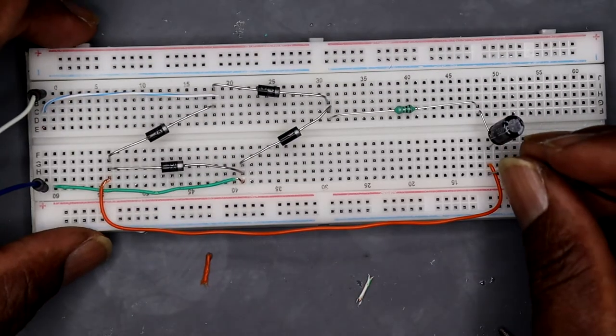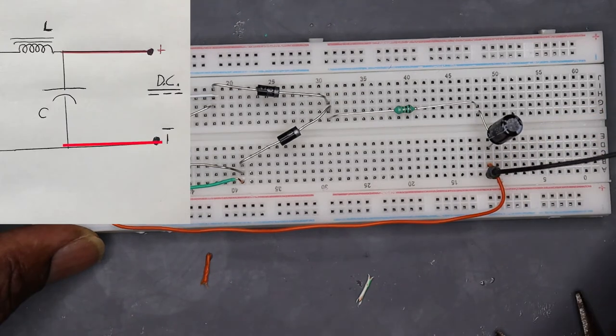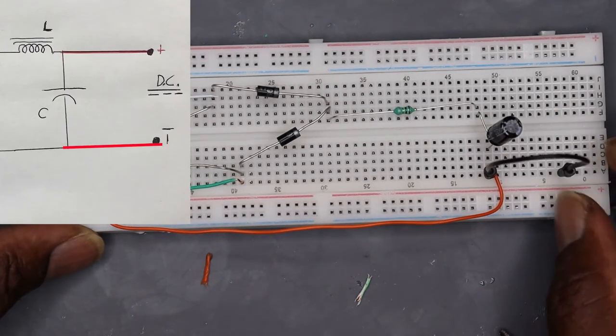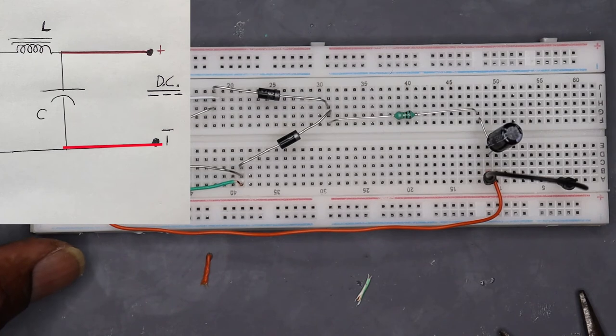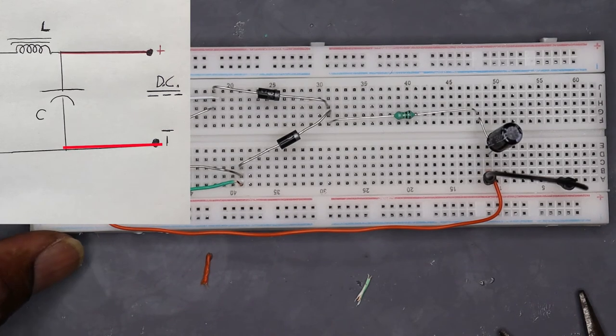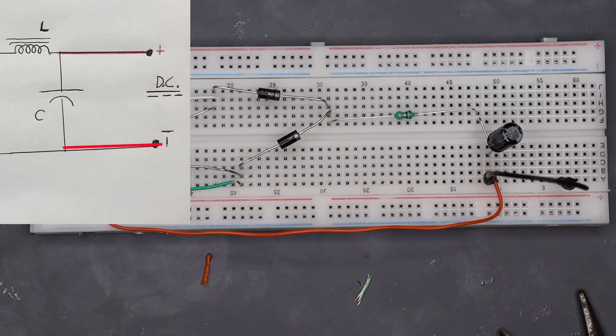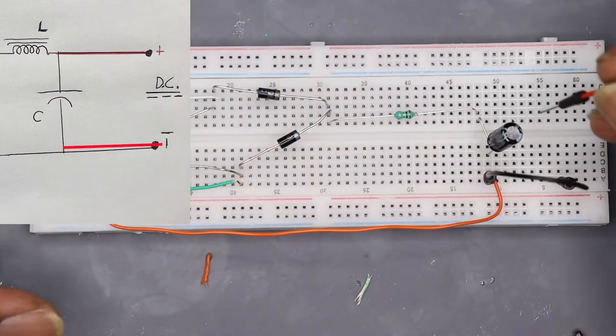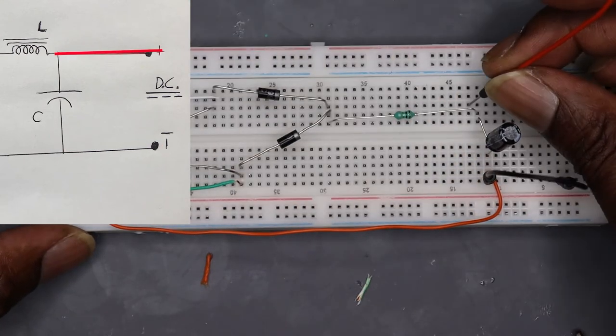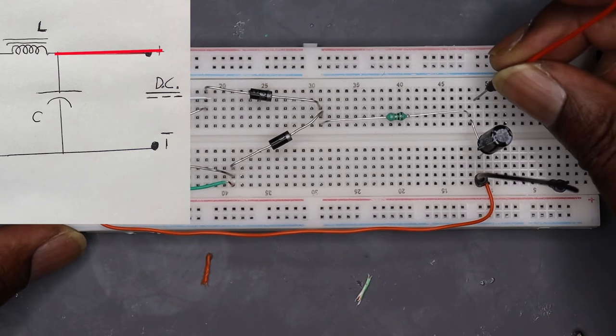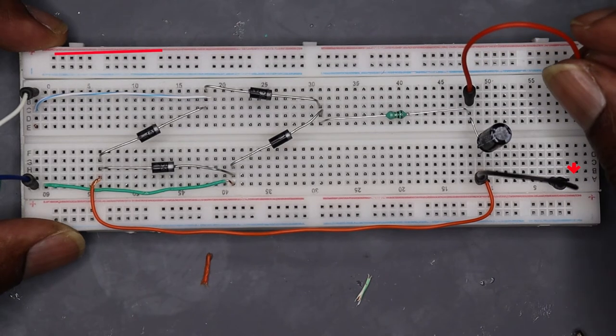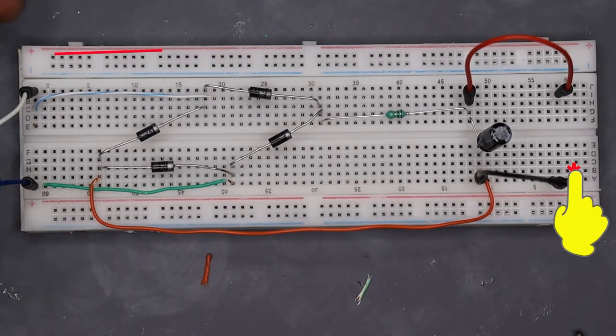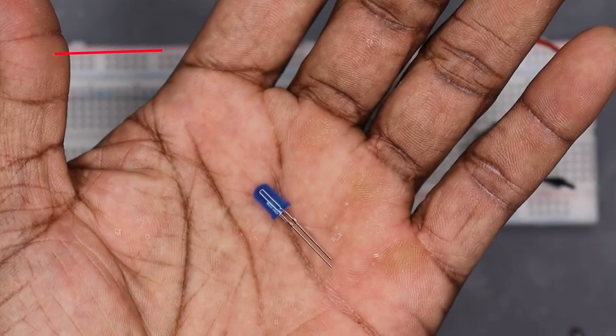Now I'm going to connect the output terminals to the load. So one connection goes to the negative end of the capacitor where we connected the two diodes, and then the other terminal will go to the positive end of the capacitor. Now I just put them at some random points towards the right that could be connected to an LED indicator or some other load.